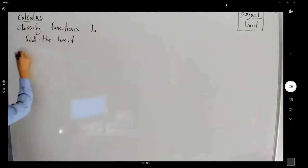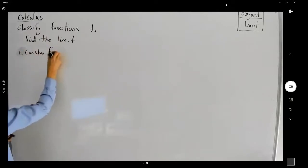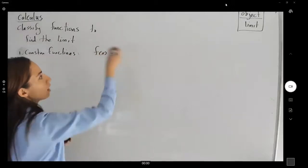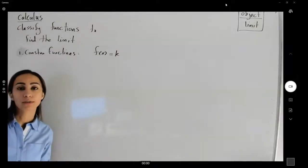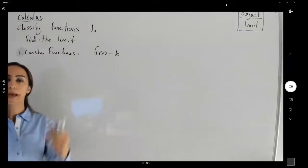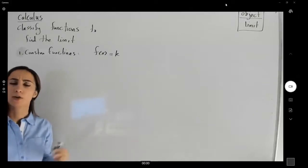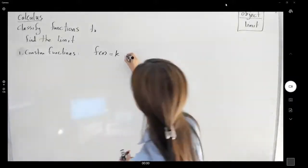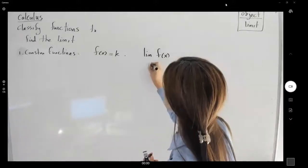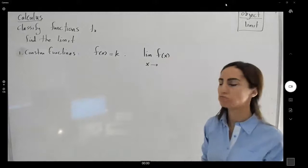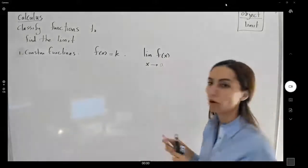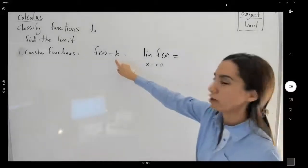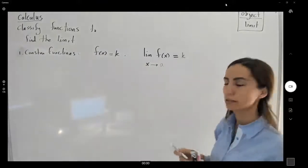Let's talk about constant functions. Remember that a constant function is defined as f of x equals a constant number — f of x equals two, f of x equals zero, f of x equals one-half, square root of two, negative one-third. Those are constant functions. No matter what x is, your y is always fixed and equal to some number k. The limit of a constant function f of x as x approaches any number is always k. Your y value, no matter what x is, equals k, so the limit equals k.